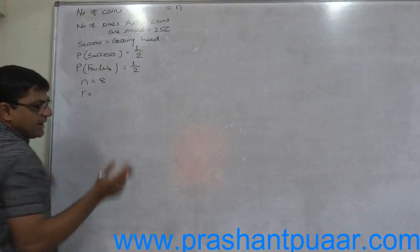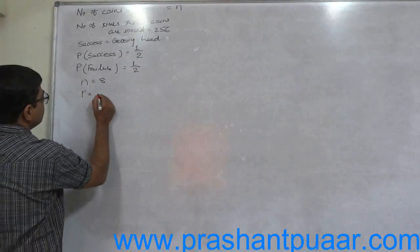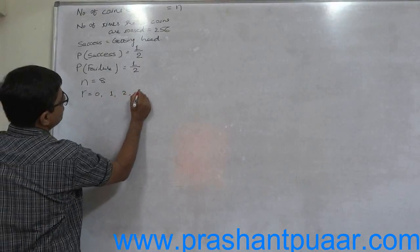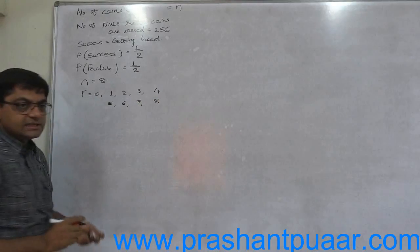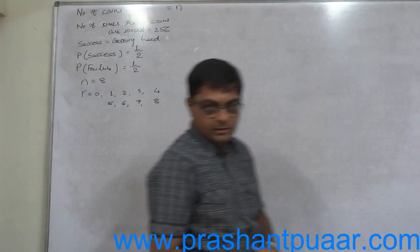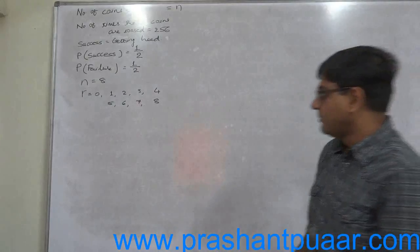But in this case N is 8. What can be R? R can be from 0 to N. That means 0, 1, 2, 3, 4, 5, 6, 7, 8. These 9 values are possible. Number of successes can be either of these.